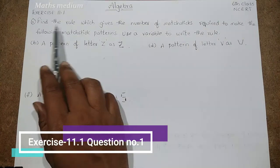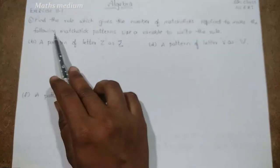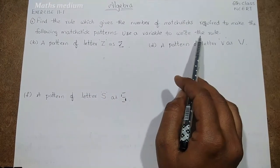Question number 1. Find the rule which gives the number of matchsticks required to make the following matchstick patterns. Use a variable to write the rule.